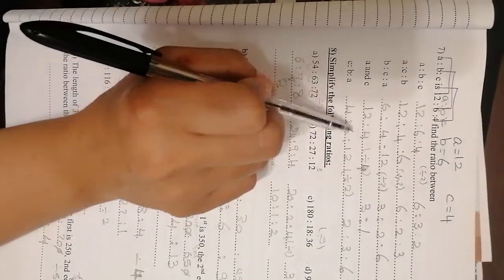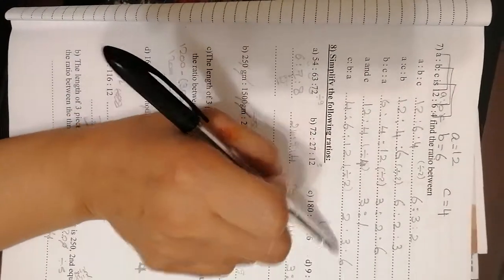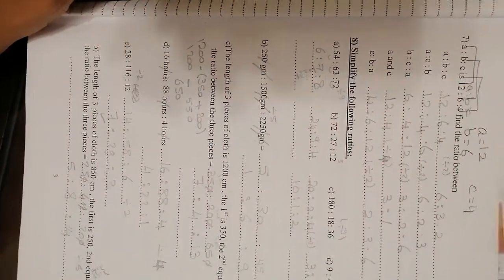C to B to A, C is 4, B is 6 and A is 12, divisible by 2. So the answer will be 2 to 3 to 6.